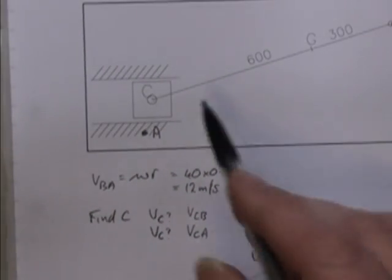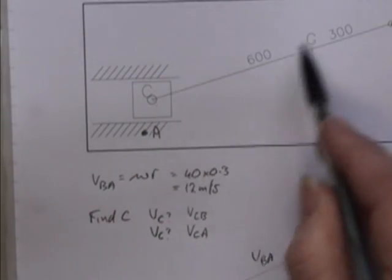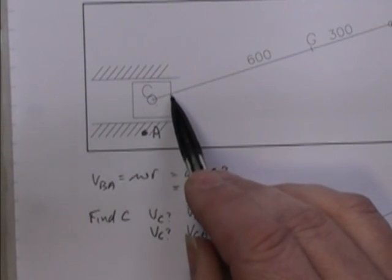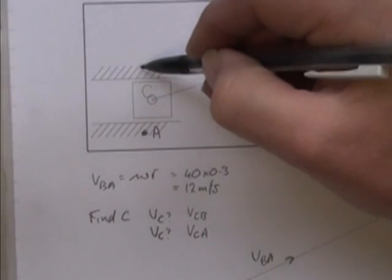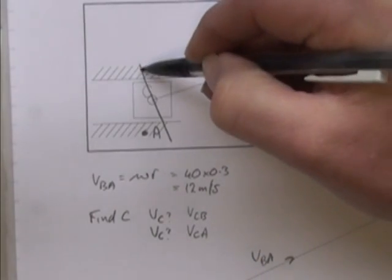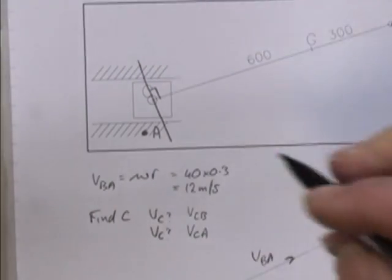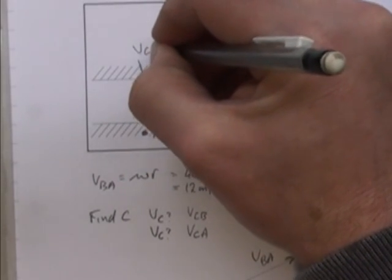CB is a link. Therefore, from what we've done in class, we know that one end of a link can only travel at 90 degrees to the link itself. So 90 degrees in here, VCB.